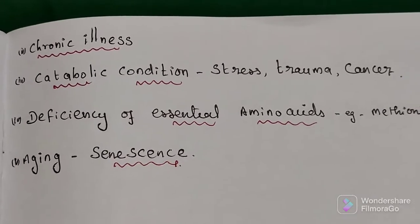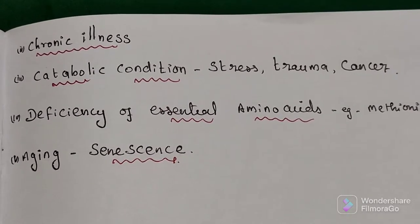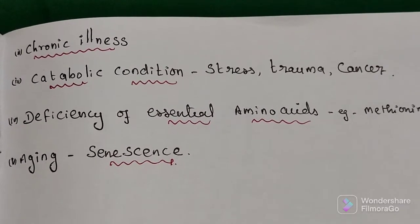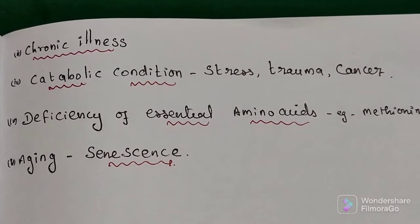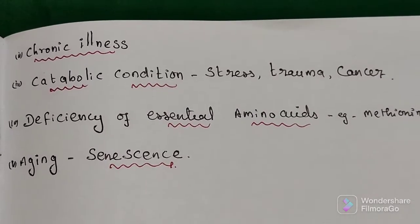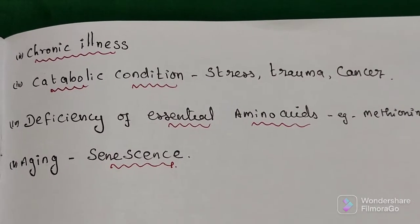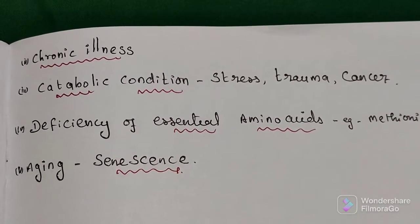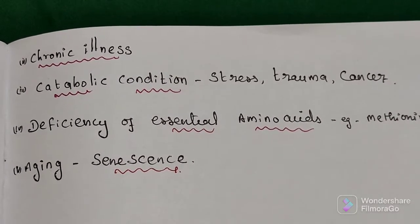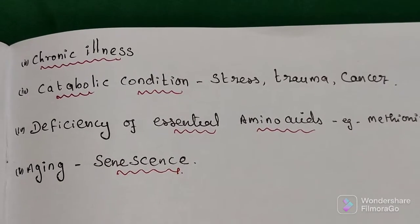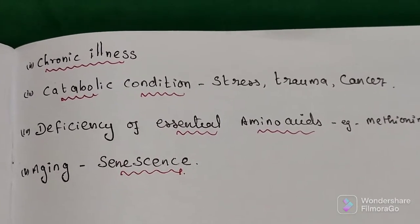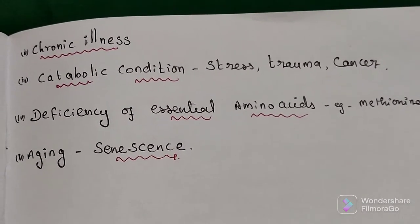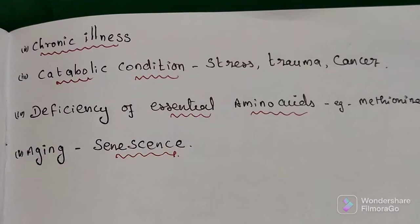Deficiency of a single essential amino acid can also put a person into negative nitrogen balance. For example, methionine — whenever translation occurs and a new protein is synthesized, the AUG initiator codon requires methionine. A deficiency of methionine leads to increased catabolism of protein, which puts the person into negative nitrogen balance.